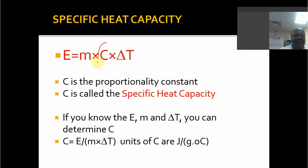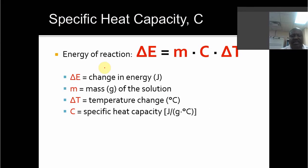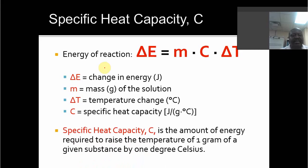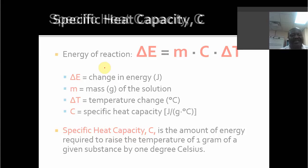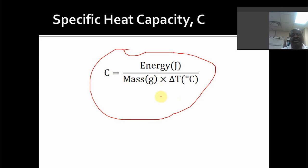To find specific heat capacity experimentally, we must know the energy input, the mass, and the temperature change, and then we can solve the equation for c. Specific heat capacity is defined as the amount of energy required to raise the temperature of one gram of a given substance by one degree centigrade. Taking the fundamental equation and solving for c gives us the equation shown, using all the terms on the right-hand side to do the arithmetic.